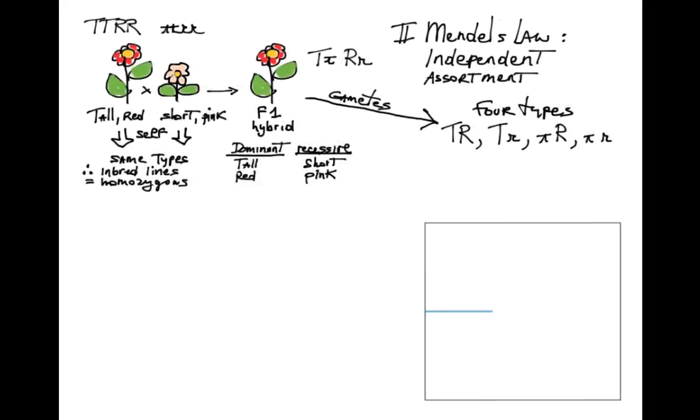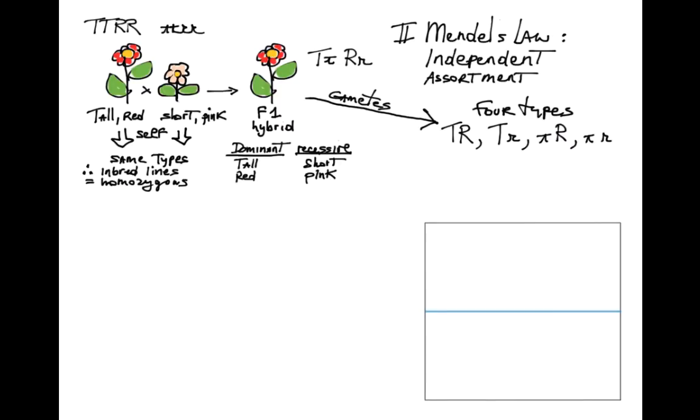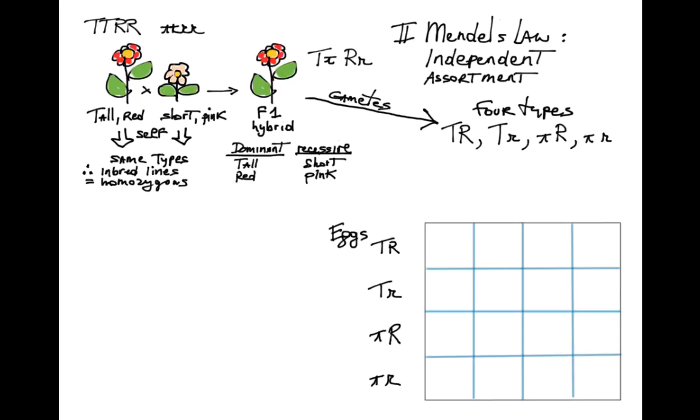To determine the F2 genotypic ratios, it is useful to draw a 4x4 Punnett square. Let's put the possible eggs on one side and the possible sperms on the other side.